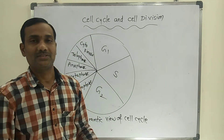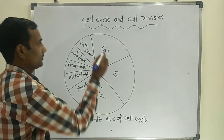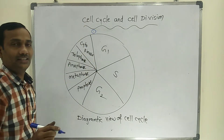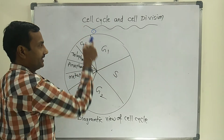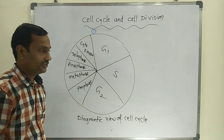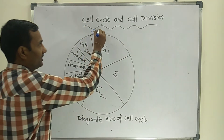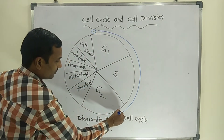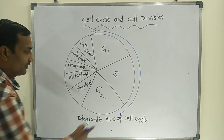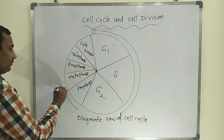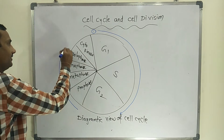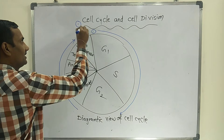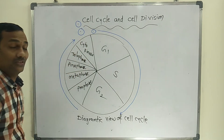Let's see what happens during the cell cycle. One single cell enters into the G1 phase, then from G1 it enters into S phase, then G2 phase. After G2 phase, the cell enters into prophase, metaphase, anaphase, telophase, and cytokinesis. At the end of cytokinesis, two daughter cells will form.